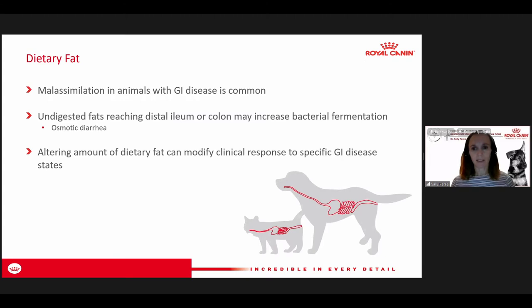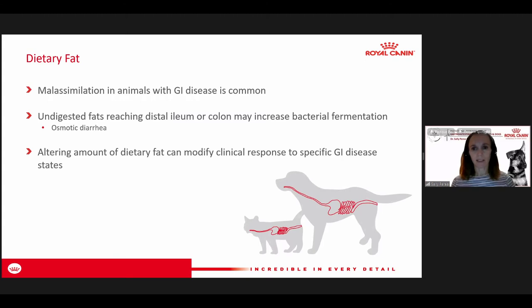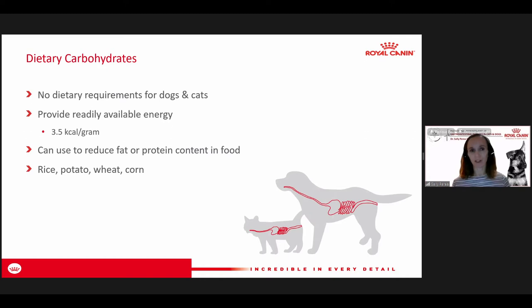For carbohydrates, there's no dietary requirement. We have essential amino acids from protein and essential fatty acids, but there's really no required need for carbohydrates in the animal's diet. However, it provides a good source of energy — the same as protein, about three and a half calories per gram. We can use carbohydrates in our formula to balance the level of protein and fat, adjusting those macronutrients up or down.